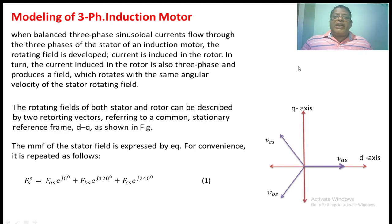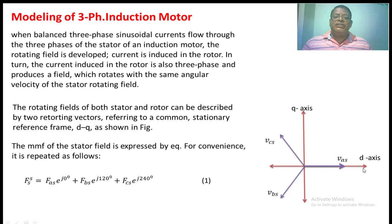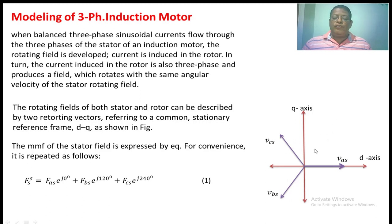We can represent both stator flux and rotor flux in a common stationary reference frame — that is the DQ frame. The D-axis is the axis passing through the rotor field or rotor flux. Perpendicular to the D-axis is the Q-axis. The voltage vector, which is the stator voltage vector VAS, VBS, VCS, are mutually displaced by 120 degrees in space.